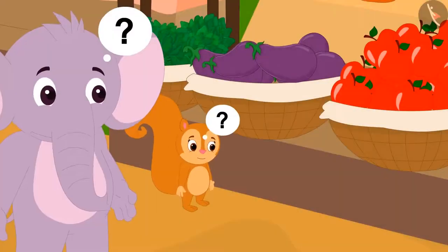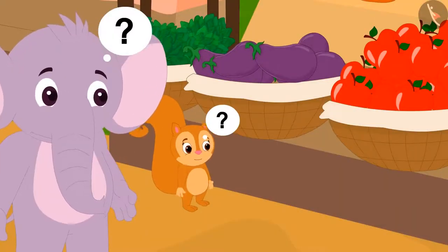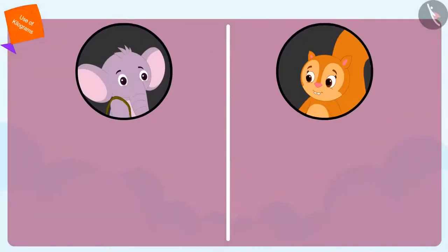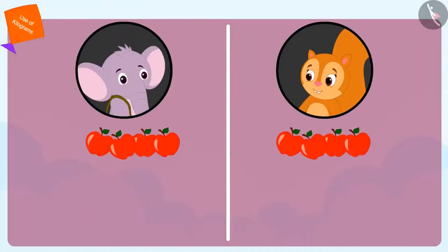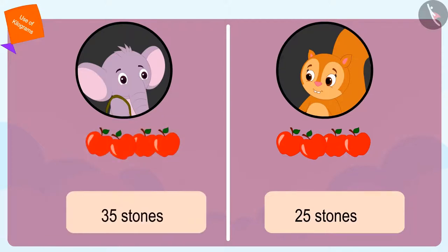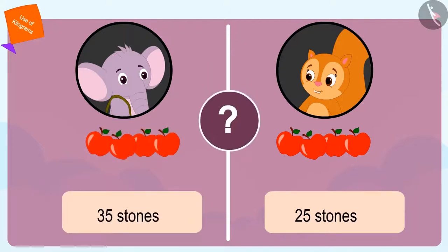Appu and Chanda were both shocked — how could this happen? Both of them bought four apples. Yet, how can the weight of Chanda's apples be equal to 25 stones while Appu's four apples weigh 35 stones?